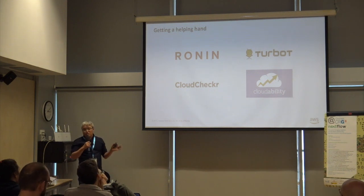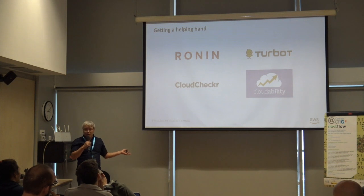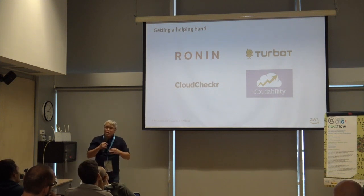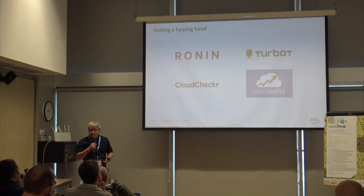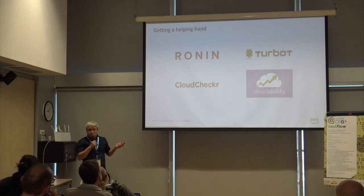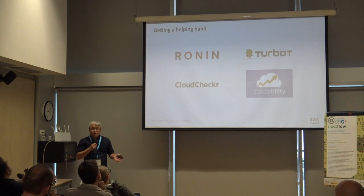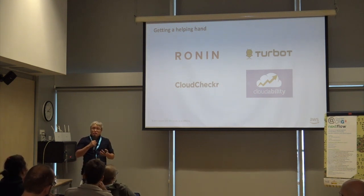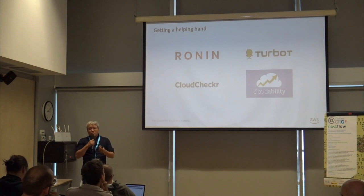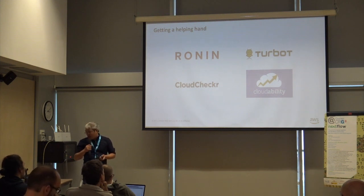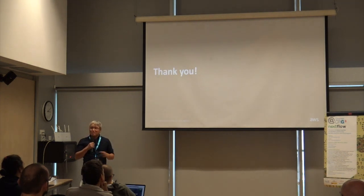You don't necessarily need to do all of this by hand. We have a lot of partners that can help you out. Companies like Ronin Cloud, Turbot, CloudChecker, and CloudAbility all implement this stuff on top of AWS for you. Ronin Cloud has a really nice way to monitor budgets on a project basis. These are partners of ours with great tools, and that's kind of how we scale out capability on AWS through our partners to get cool features that are valuable to researchers. Thank you, and I'll take any questions.